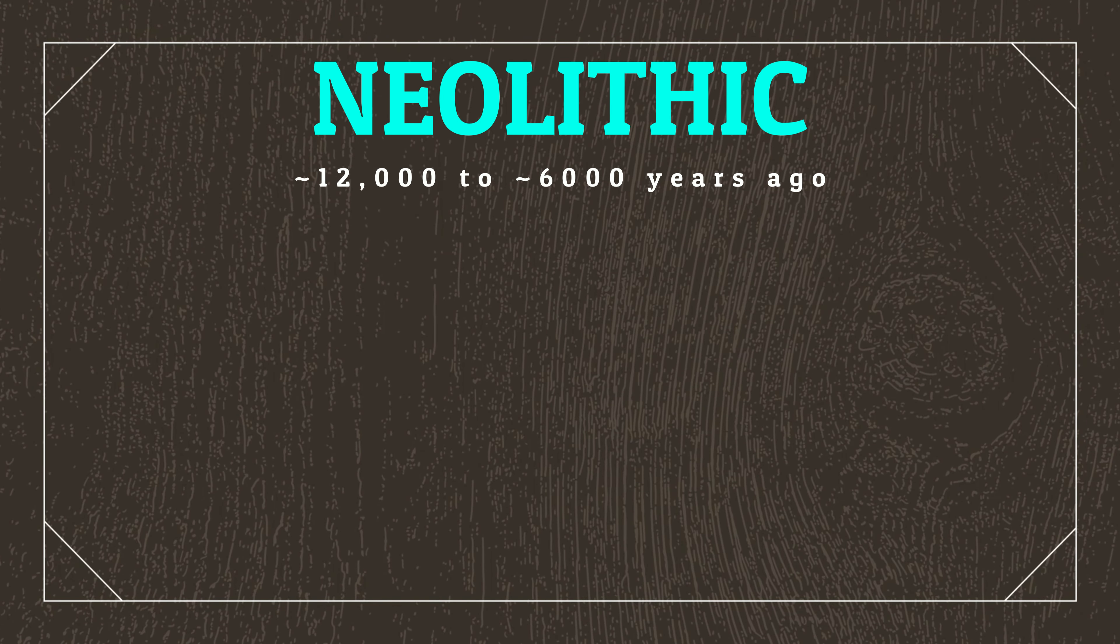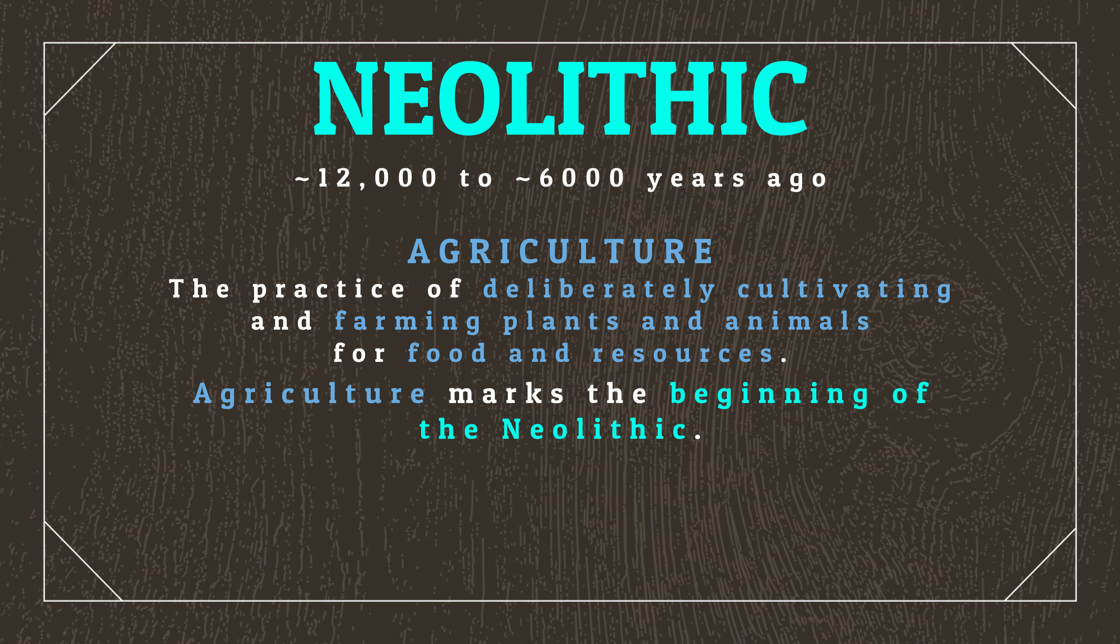Once cultures establish permanent settlements in the Mesolithic, an inevitable outcome is the development of agriculture, which refers to the practice of deliberately cultivating and farming plants and animals for food and resources. The emergence of agriculture marks the beginning of the Neolithic era, which is the final period of the Stone Age. On Earth-like planets, it's expected that agriculture is most likely to develop, or at least first likely to develop, across temperate climates, where not only are seasons more structured and reliable, but crops tend to be annual, meaning that their entire growing season takes place within a single year.